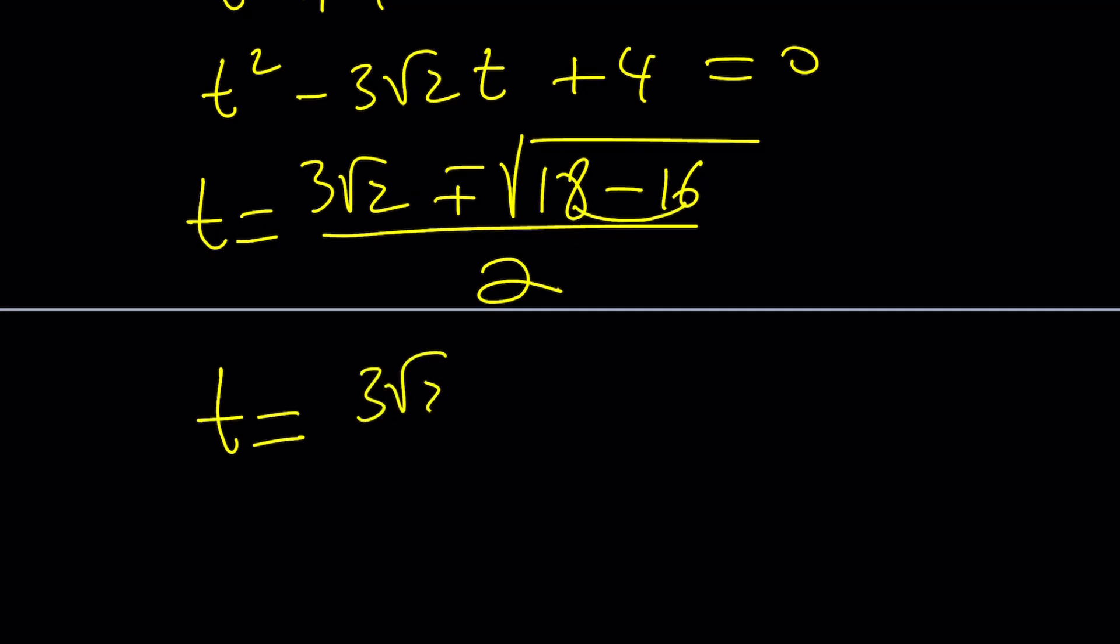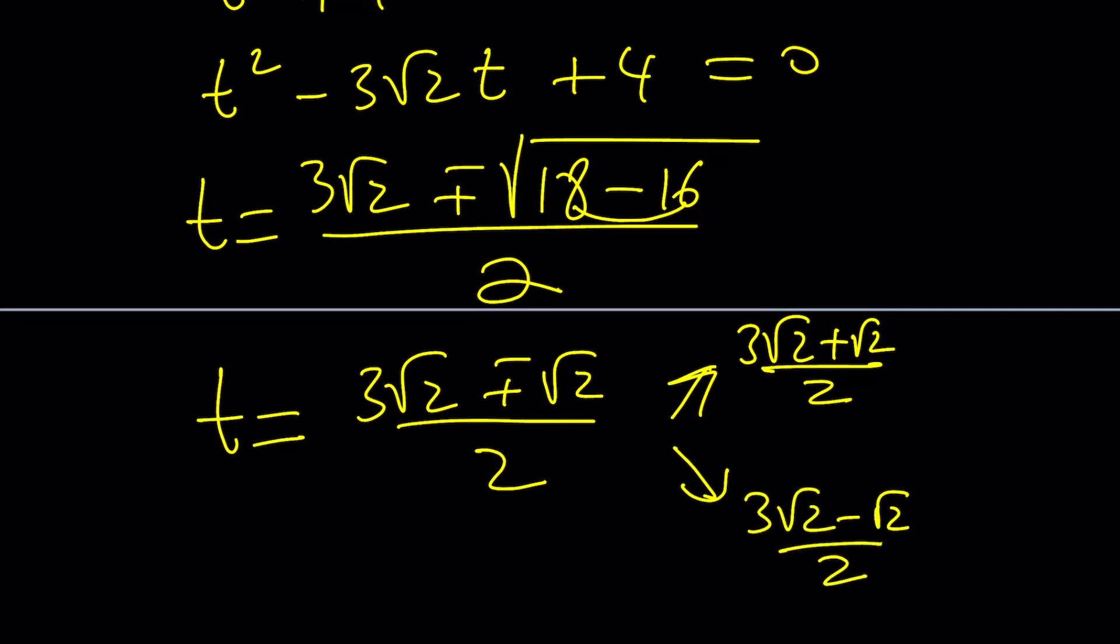So we're going to get 3 root 2 plus minus root 2 divided by 2. And this can be written as 3 root 2 plus root 2 divided by 2 or 3 root 2 minus root 2 divided by 2. And that is 4 root 2 divided by 2, which is 2 root 2. And this is root 2 because 2 root 2 divided by 2, 2 cancels out. Makes sense? So these are the t values.